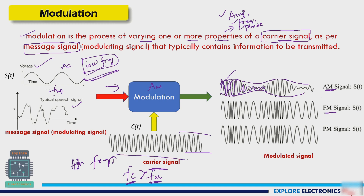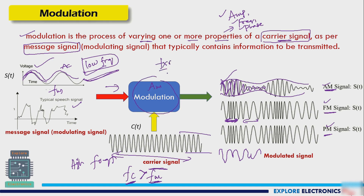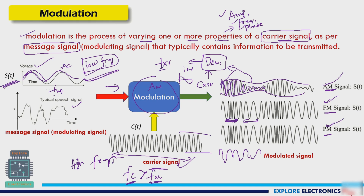In frequency modulation, the carrier has a constant amplitude but its frequency varies according to the message signal. When the message signal amplitude goes high, the carrier frequency also goes high, and when it goes low, the frequency goes low. In phase modulation, we vary the phase of the carrier signal according to the message signal. So AM varies amplitude, FM varies frequency, and PM varies phase of the carrier in accordance with the modulating signal.